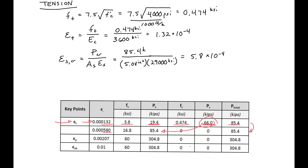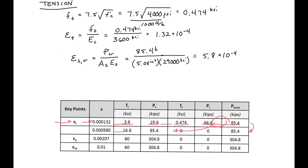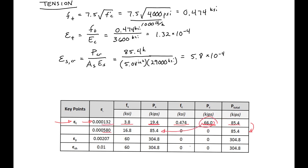The other significant points in tension are the yield point — which is the same magnitude as the yield point in compression — and the end of the strain hardening region. After identifying these points, we have the complete curve for the tension side.